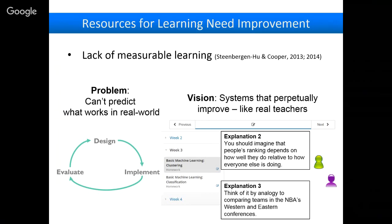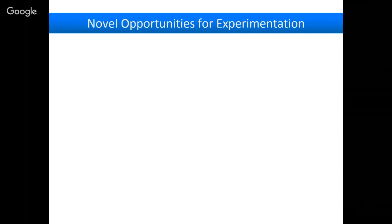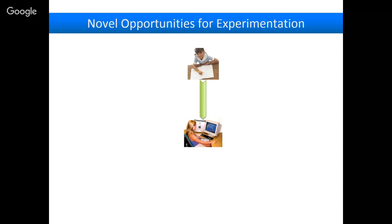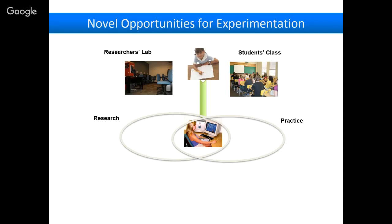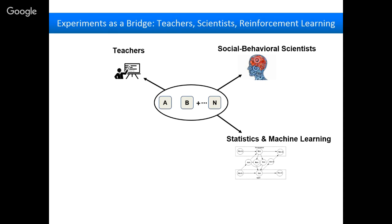Digital resources move us closer to this vision because they give us new opportunities to experiment. When you take a student from solving problems on pen and paper to doing it online — say Khan Academy — it's a simple step, but in some ways it's revolutionary. It brings together a researcher's lab where you can do controlled randomized experiments with a real-world classroom. These students aren't solving problems because they're participating in experiments — they just want to learn so they can do better on their homework. Technology allows us to do experiments that bridge research and practice.